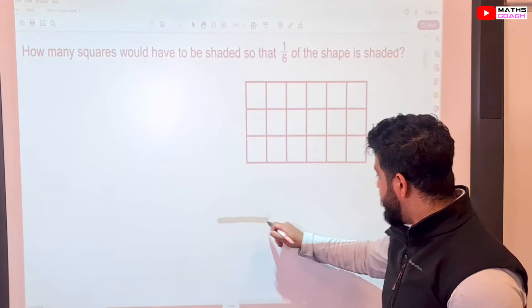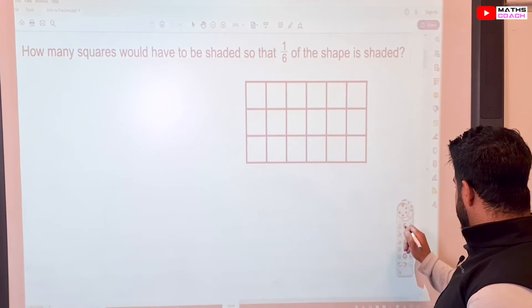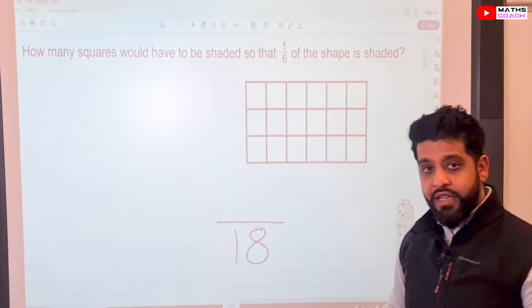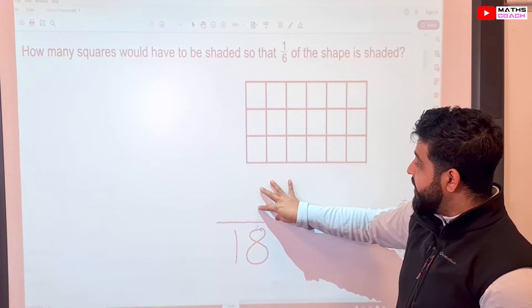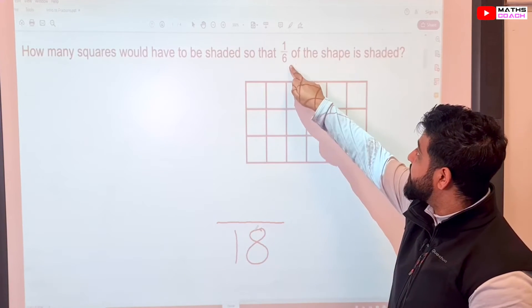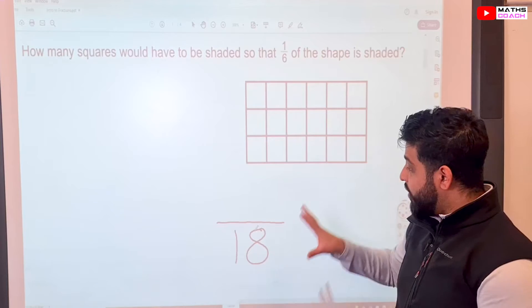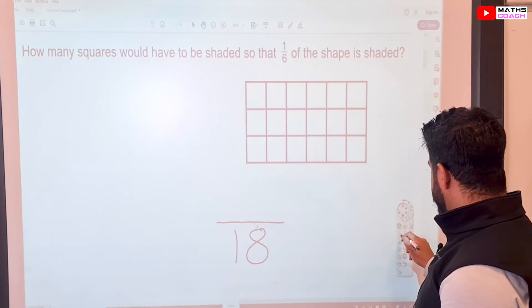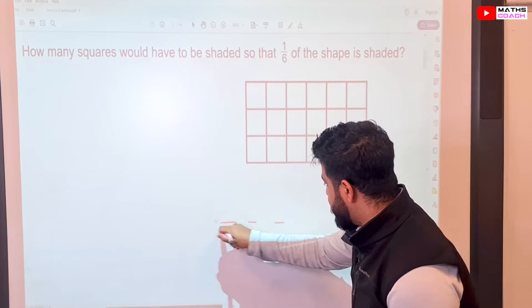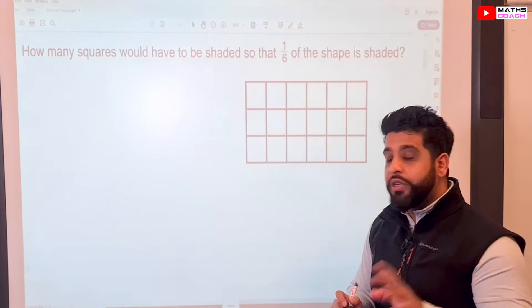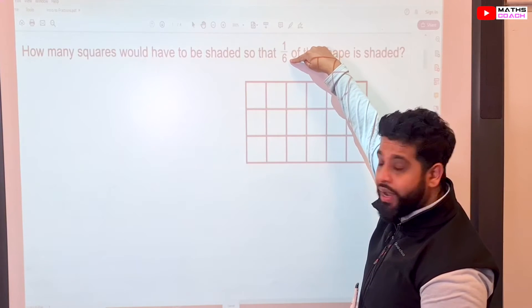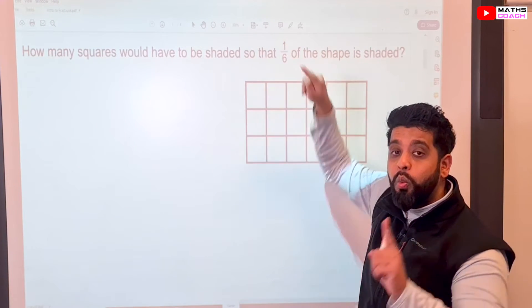If we did want to write it as a fraction with a denominator of 18, that's good. So we now need to make sure that one-sixth of this shape is shaded. An easier approach to take would be to look at this fraction. So for every six squares, we are going to shade in one of them.